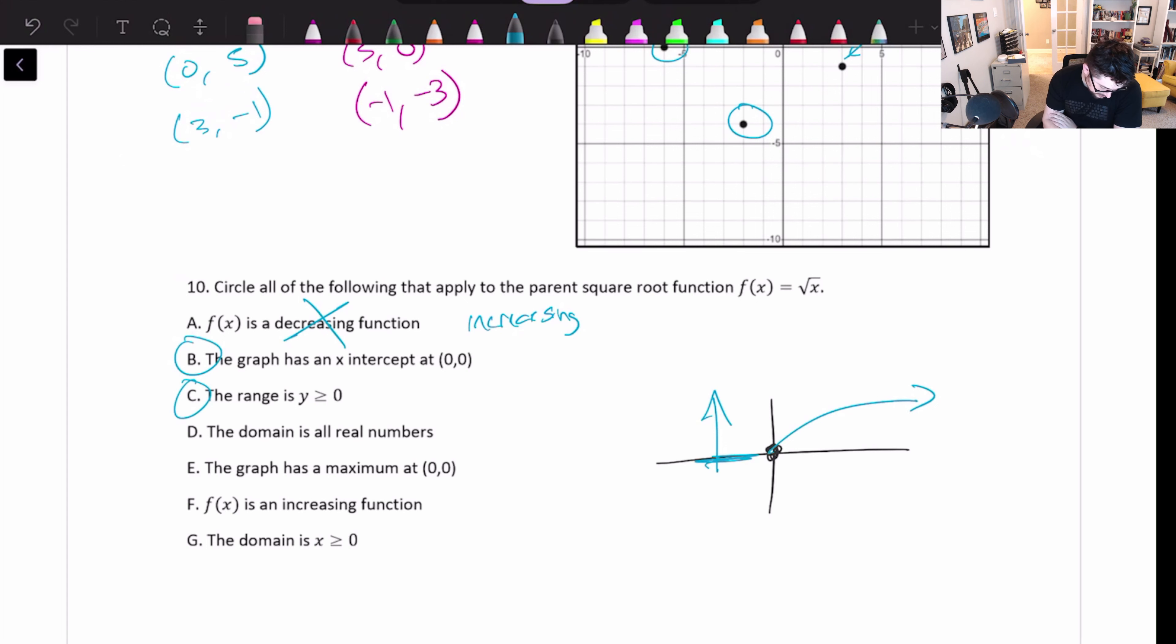Domain is all real numbers. No. It's not all real numbers. It is only the positive numbers. Remember, it's 0 to positive infinity. The graph has a maximum at 0, 0. No, it's not a maximum. It's a minimum. The lowest number is at 0, 0. You can have a square root with a maximum, but if you did, it'd be something that looks like this. It doesn't have to start at 0, 0, too. So we have something like this. It has to be going down. So that's not the case here. It's an increasing function. Yes, we established that on question 1. Domain is x is greater than or equal to 0. Yeah, that's exactly what we established on question D, on part D.